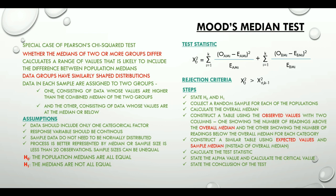Well the steps start with the basics that is stating the null and the alternative hypothesis and collecting a random sample for each of the populations. We then calculate the overall median.